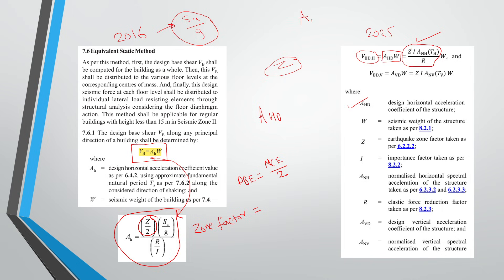That means normalized horizontal spectral acceleration of the structure. So in 2016, SA by G normalized to gravity, but the formula consists of effective peak ground acceleration.